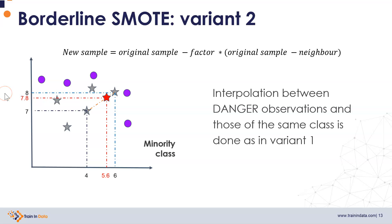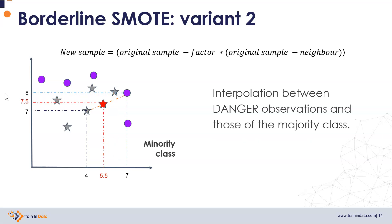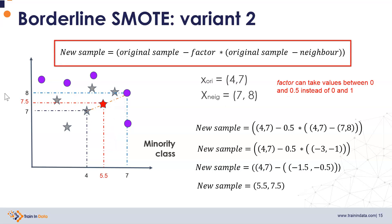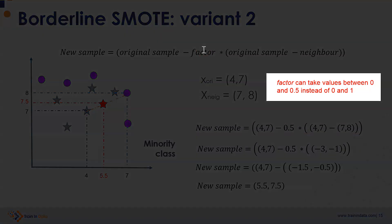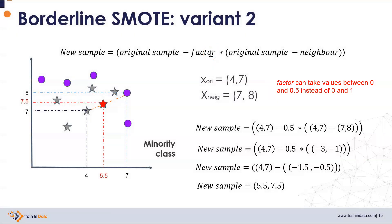Variant 2 creates synthetic examples by interpolating between samples in the danger zone and samples from the minority class, just like variant 1 and SMOTE, but also creates synthetic examples by interpolating between the danger zone sample and a neighbor from the opposite class. The formula is identical, but the factor takes values between 0 and 0.5 — not 0 and 1 as previously — guaranteeing that the synthetic value will be closer to the minority class observation than to the majority class neighbor.